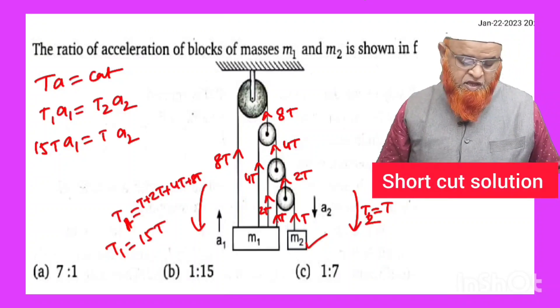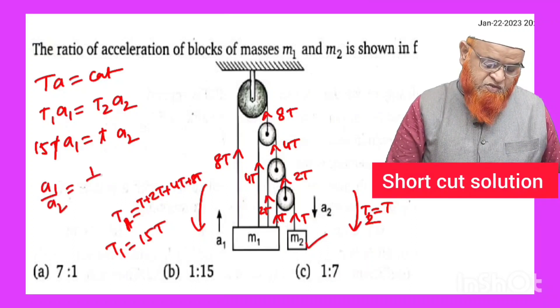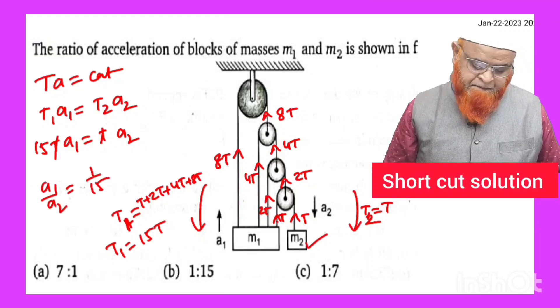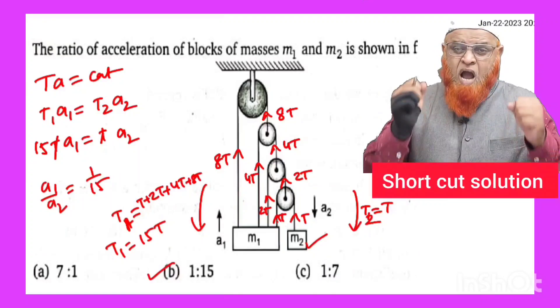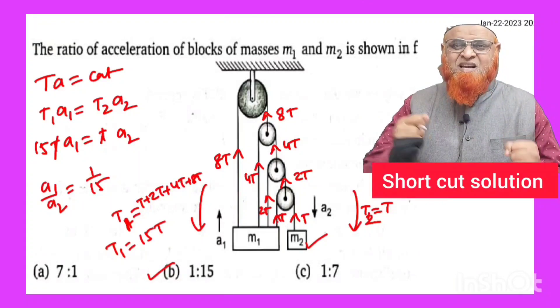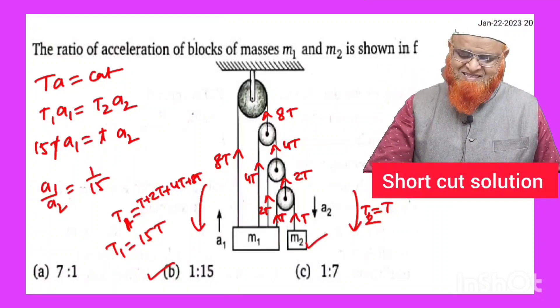So here T gets cancelled, you can write a1 by a2 is going to be 1 by 15. So therefore your correct option is B. So thank you very much. How do you feel? This solution, is it thrilling, is it exciting? Thank you very much, have a nice day.